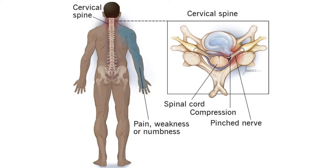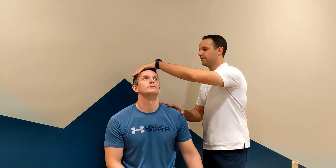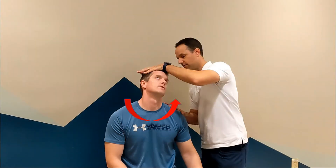Sperling's test is used to evaluate for cervical radiculopathy, among other causes of neck and upper extremity pain. The patient is seated with the examiner in a position to apply an axial load to the top of the patient's head.